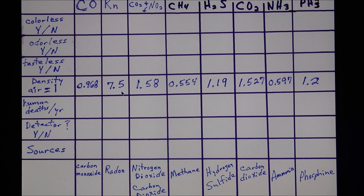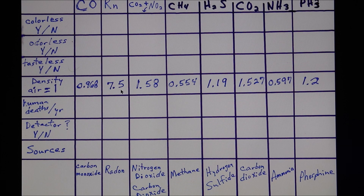Here's the thing about density though — where can you find the gas? You might say radon is always going to be in the lower parts of a building or home. That may be true, but it may also be false, because a lot of times in buildings there is convection — forced convection. That means fans are running, air conditioners, heating, depending on the season. Radon is 7.5, but you might find it in the attic because of the way air is being forced through the building.